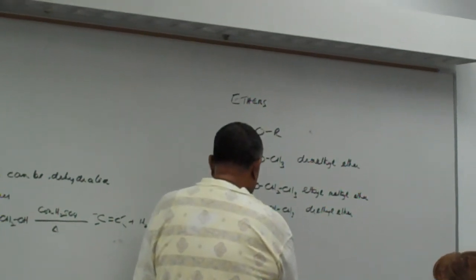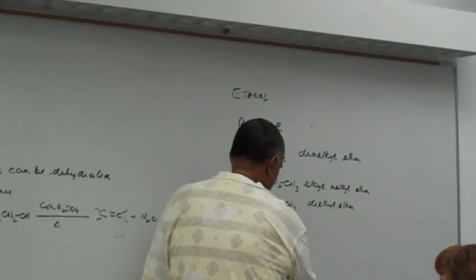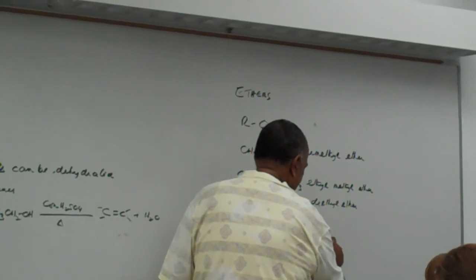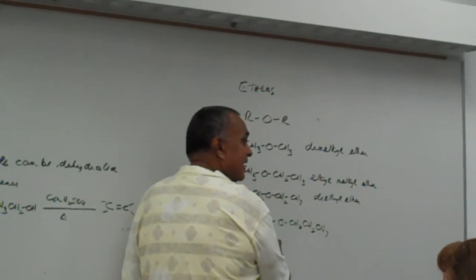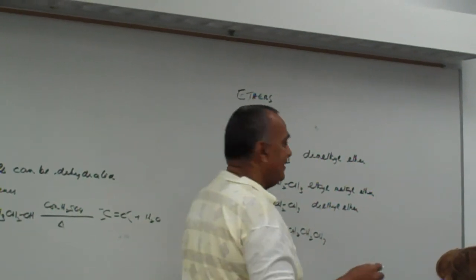If we have this one where the R groups are different again, we have an ethyl on this side and a propyl on this side. We say ethyl propyl ether.